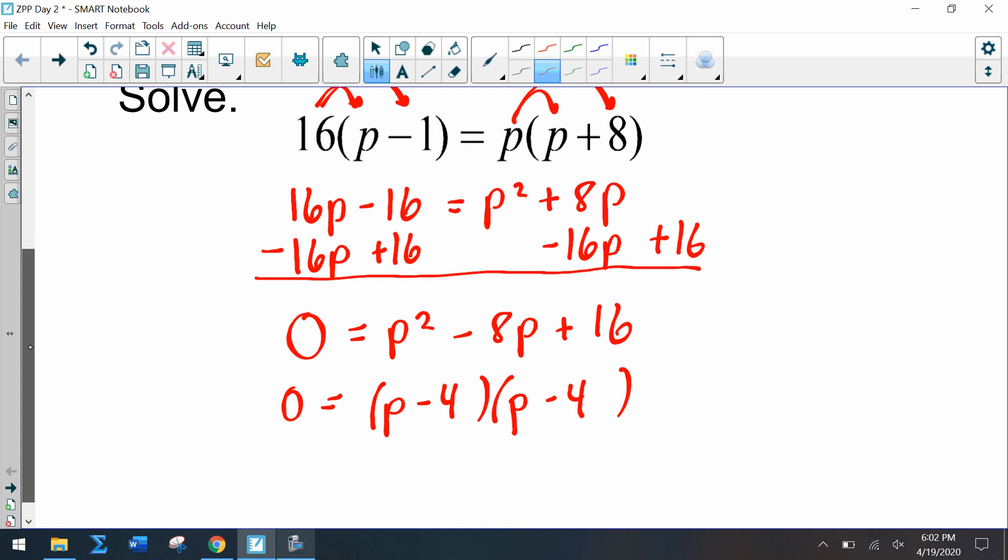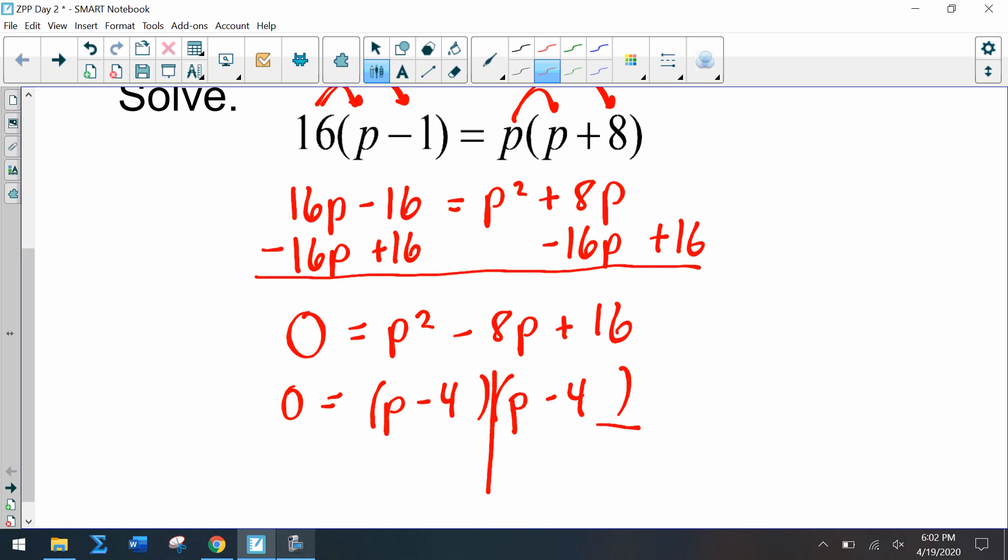And when we tee off, notice how we get the same answer twice. So p = 4 is our final answer, and it just so happens that it repeats twice. Now this is something that we'll begin to investigate next year when you're in Algebra 2, so we'll come back to examples like this when we do some factoring and solving in class next year.